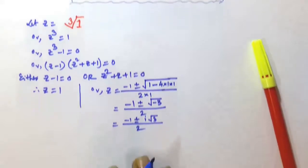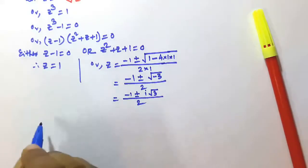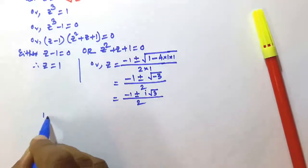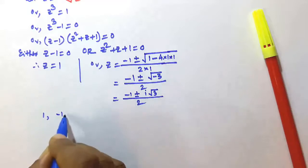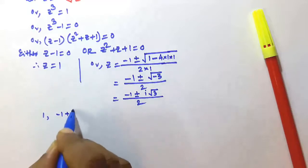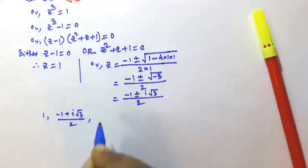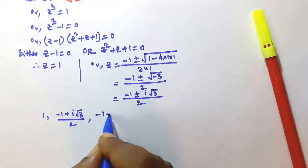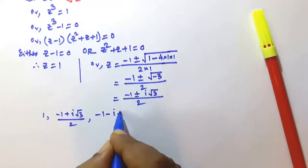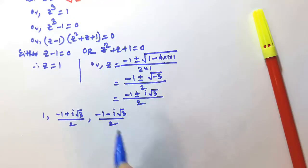So the three roots we have found are: 1, then minus 1 plus i root 3 all divided by 2, and the third one is minus 1 minus i root 3 all divided by 2.